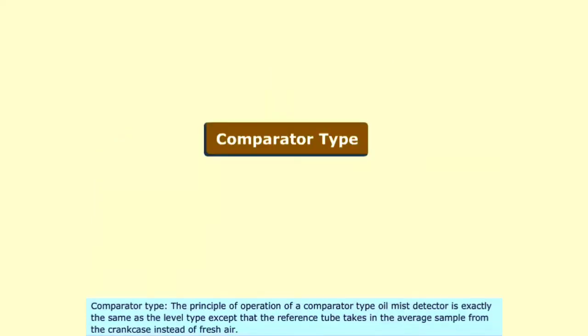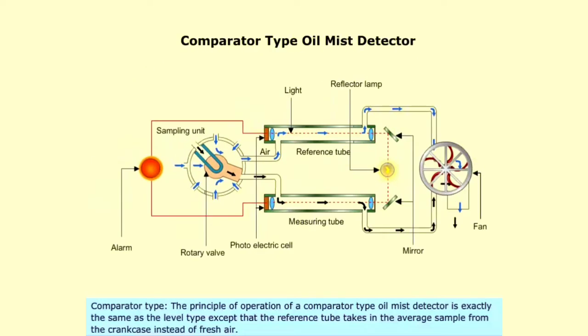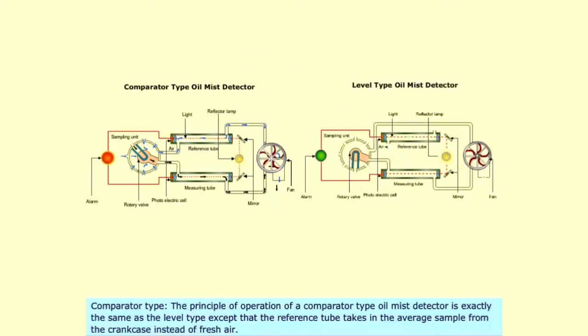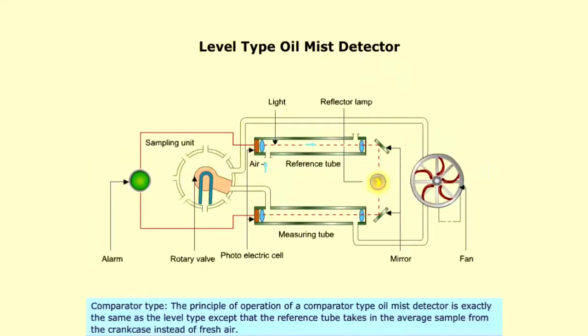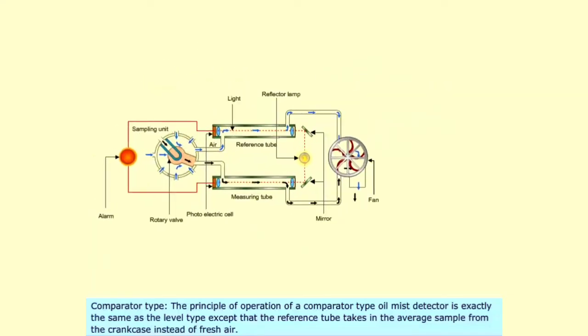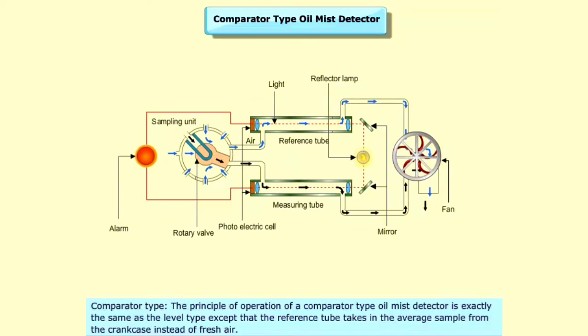Comparator Type. The principle of operation of a comparator type oil mist detector is exactly the same as the level type, except that the reference tube takes in the average sample from the crank case instead of fresh air.